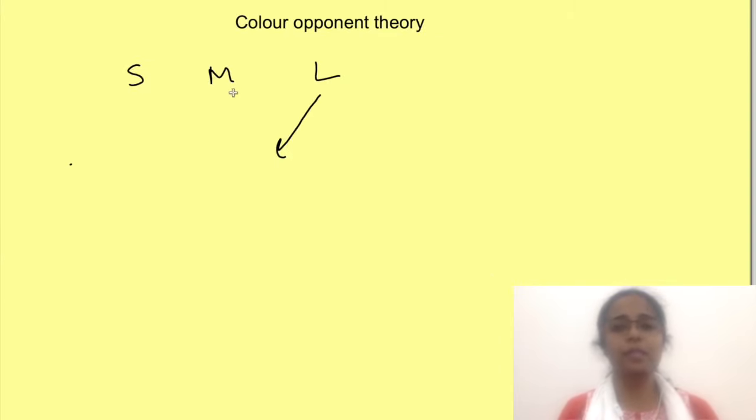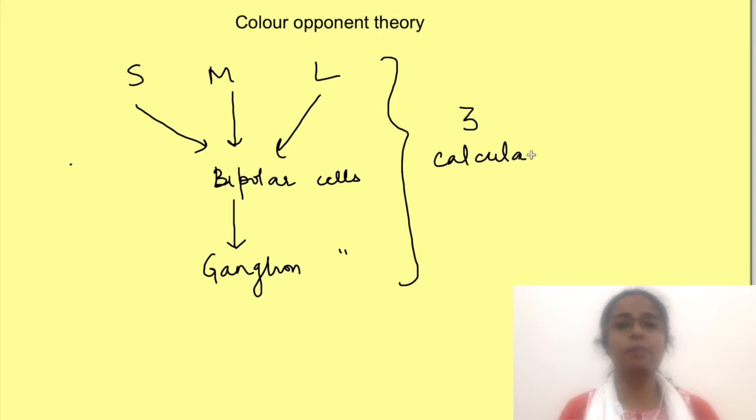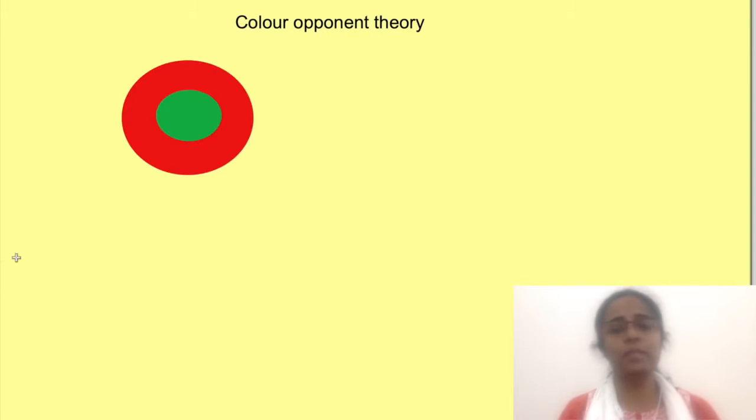Color opponent theory says that the signals from cones are processed further also. Fundamentally there are three different types of calculations which occur because signals from cones are impinging on another cell also. Basically the calculations are occurring at the level of the ganglion cell and this cell output leads to color perception. We will take one example to understand this.